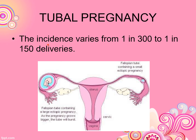The incidence of ectopic pregnancy is 1 in 300 pregnancies. In 300 pregnant women, there is one case of ectopic pregnancy. In 150 deliveries, there is one ectopic pregnancy case.